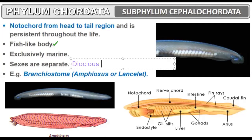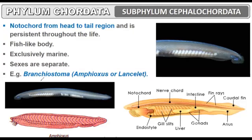This example is very important because it is asked in many questions. Branchiostoma is a chordate. In Urochordata, the notochord is present only in the larval tail. But in Cephalochordata, the notochord extends from head to tail region and is present throughout life. Amphioxus has a fish-like body and is also called Lancelet because of its lens-like shape.